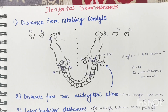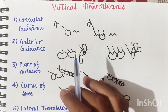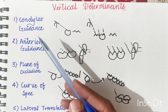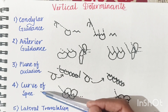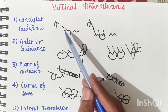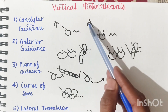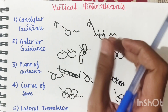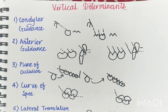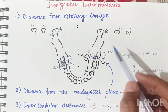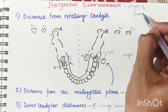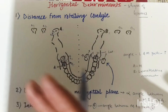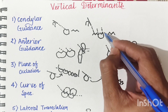Now let's understand the vertical determinants of occlusal morphology. These are: condylar guidance, anterior guidance, plane of occlusion, curve of Spee, and lateral translation movement. To recap: horizontal determinants determine the shape of grooves and fossae, while vertical determinants determine the height of the cusps.